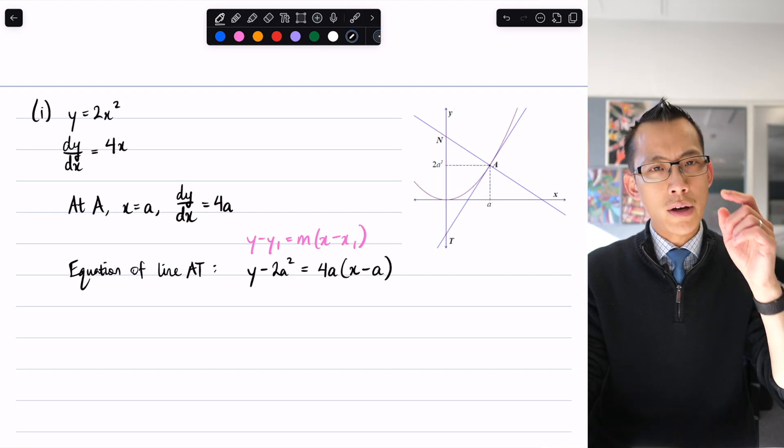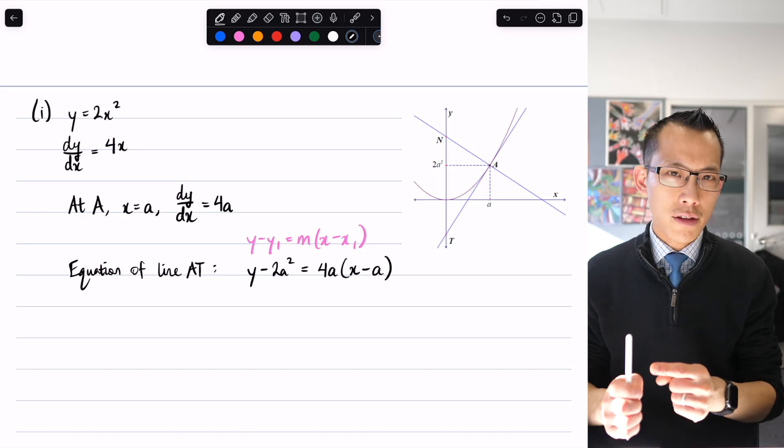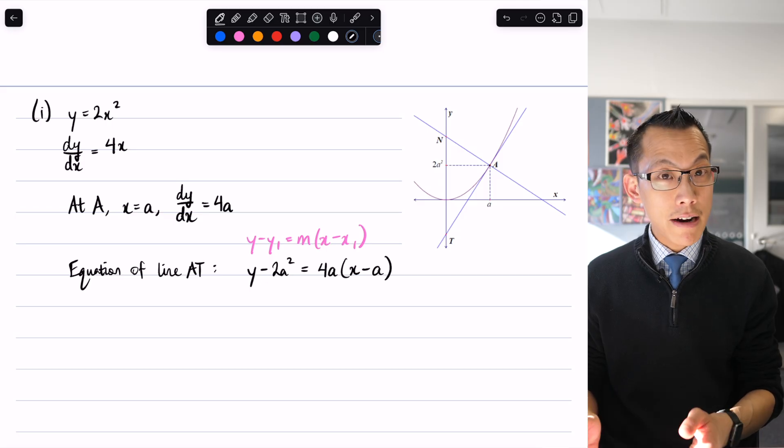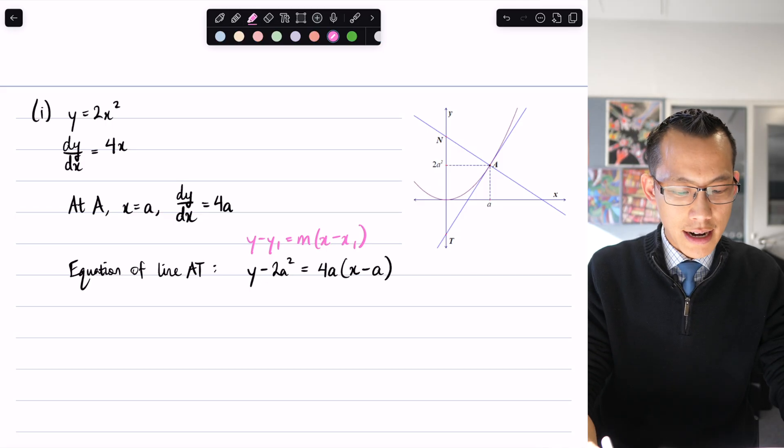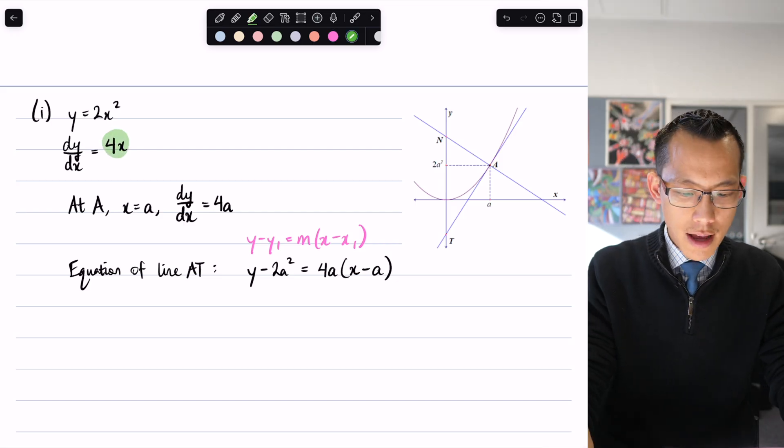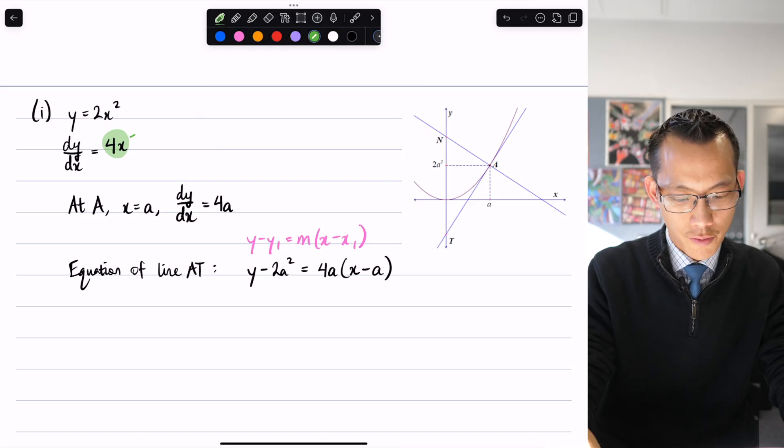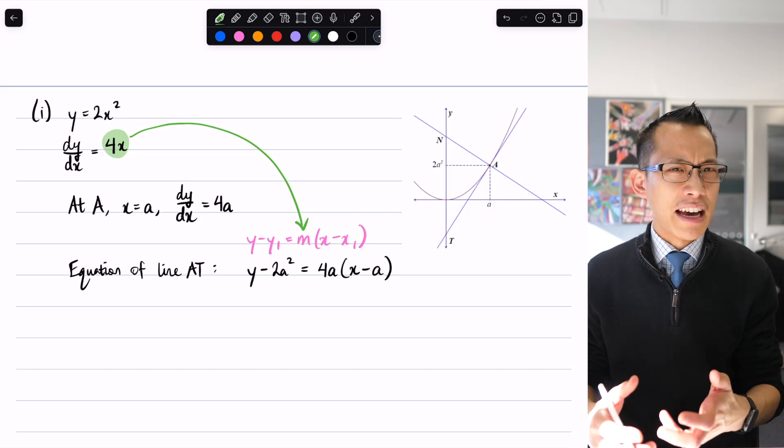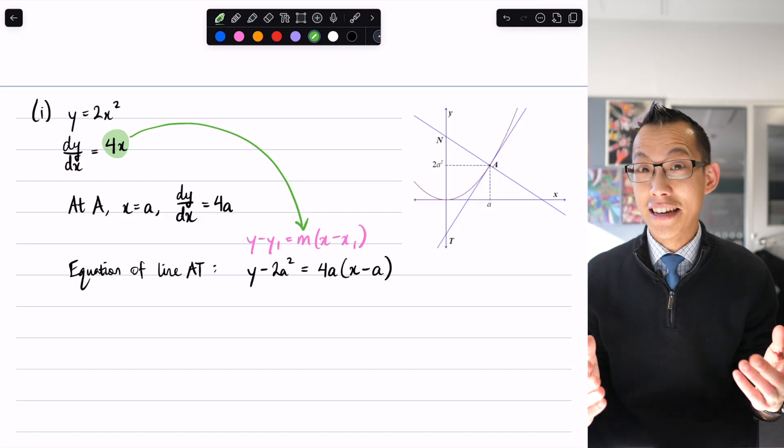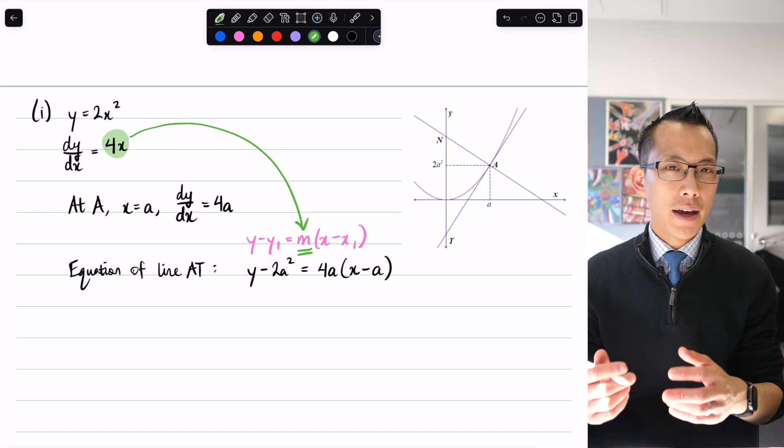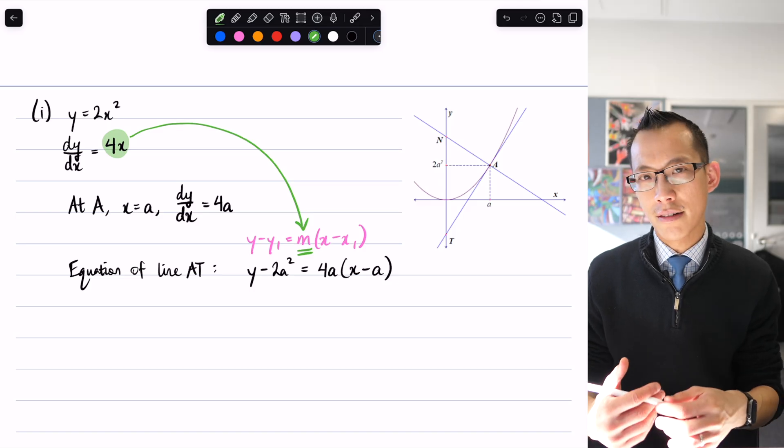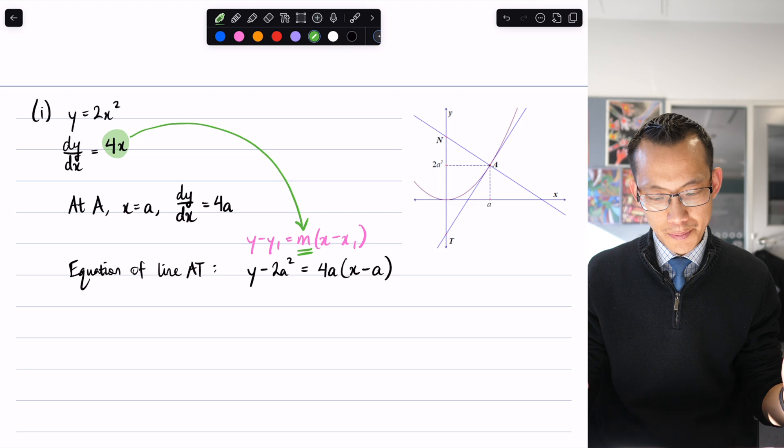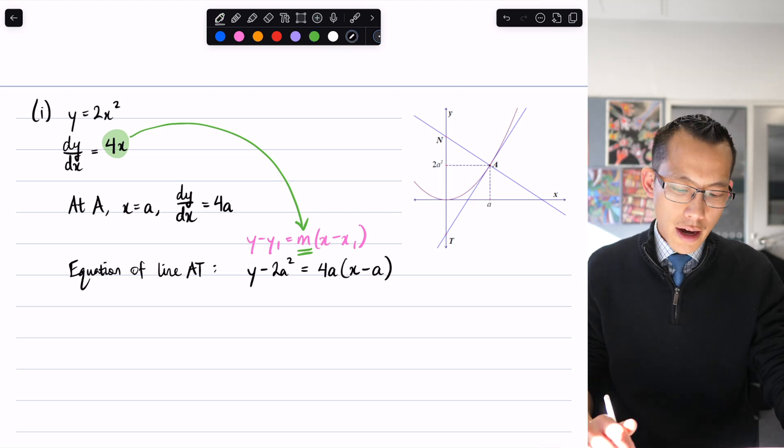A common mistake students make is taking the gradient function dy/dx = 4x and putting that straight into point-gradient form. This doesn't work for a couple of reasons. You'd end up getting x² and the tangent line would be a parabola, which doesn't sound right. Also, m is a constant and can't change, unlike 4x which is a gradient function. That's why I have to substitute 4a and not 4x.